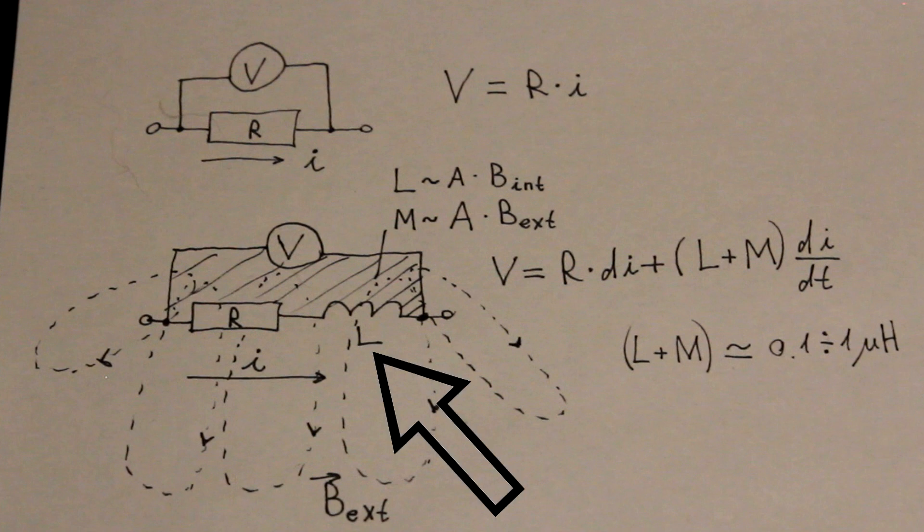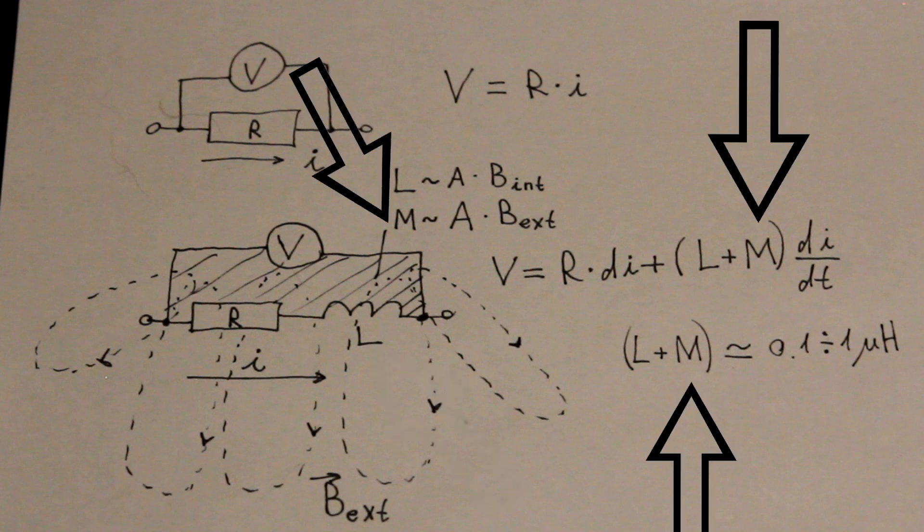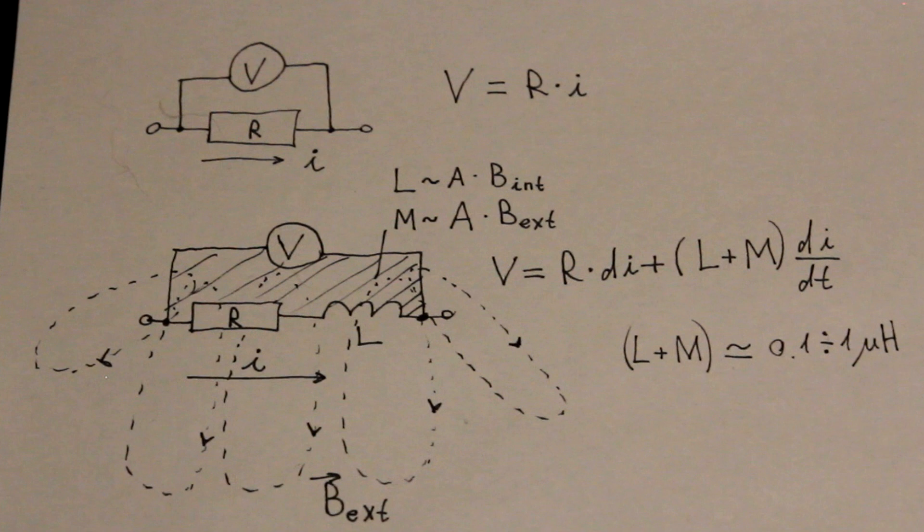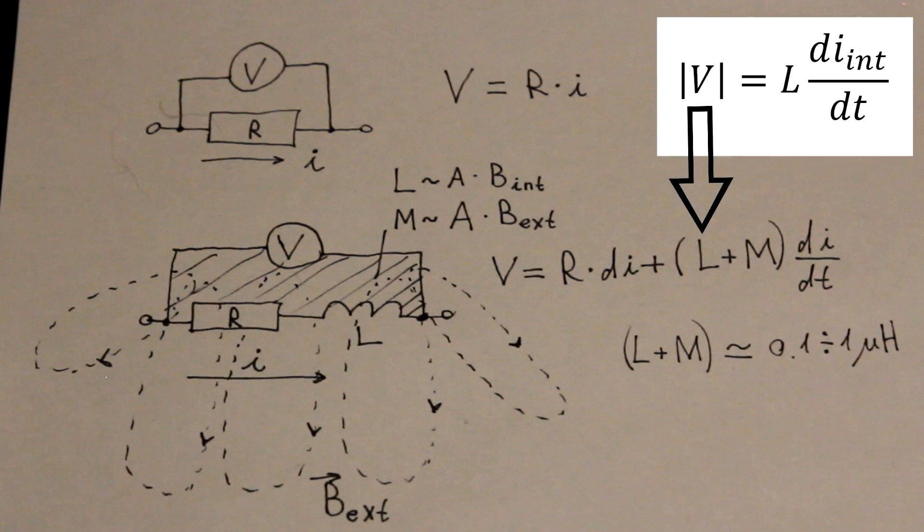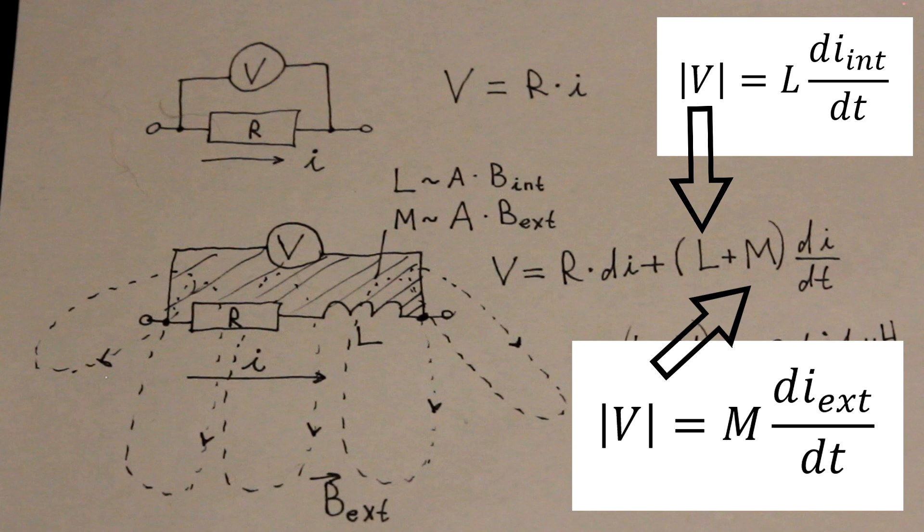Here we include the internal inductance L of a resistor and the mutual inductance M. Both L and M represent the error caused by EMF induced by magnetic fields passing through the measurement loop. The only difference between L and M is that L accounts for the magnetic field created by the current passing through the resistor itself, while M accounts for the magnetic field that is generated by everything else, even the other parts of the same circuit.